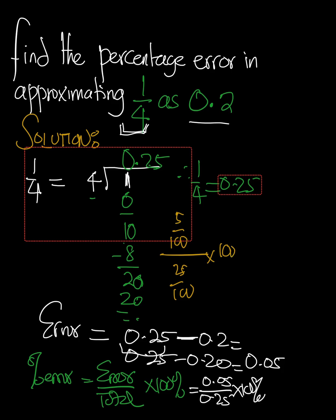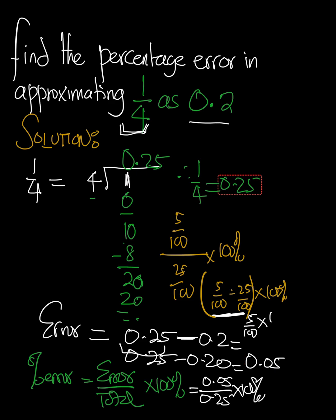This is the same as 5 over 100 divided by 25 over 100 times 100%. We can rewrite this as 5 over 100 multiplied by 100 over 25 times 100. This will cancel out that. This will go here 1, goes here 5. 5 goes here, goes here 20. And then we're going to get 20.